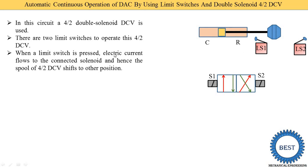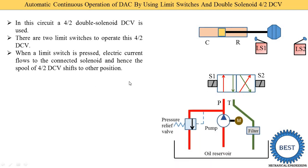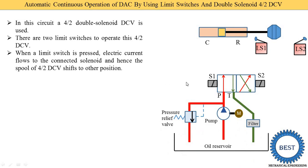When any one limit switch is pressed, electric current flows to the connected solenoid, and hence the spool of the 4 by 2 DCV shifts to another position. For the hydraulic system we also require an oil reservoir, a pump, a motor to run the pump, a pressure relief valve, and a return line.